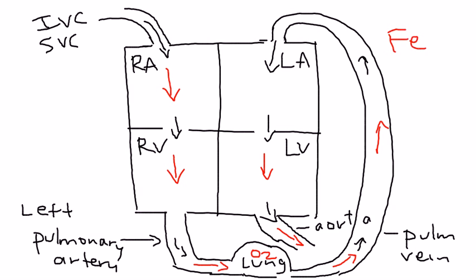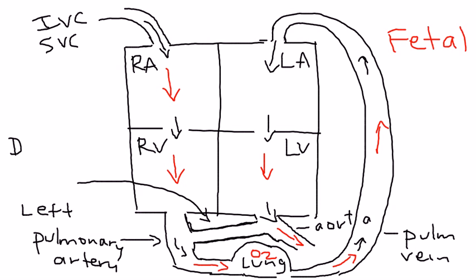In the fetal circulation — the baby in utero — the lung is not yet developed. There is something called a ductus arteriosus. I'm going to exaggerate it for the sake of the diagram. This connection is the ductus arteriosus. It allows blood in the fetal circulation to go directly from the right side of the heart to the aorta.